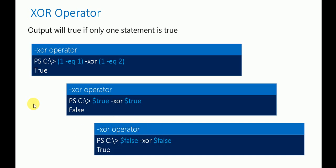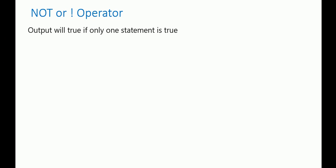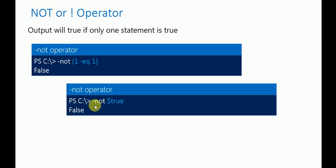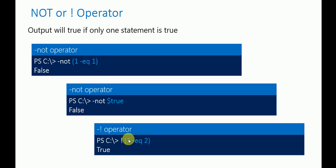Now let's look at the NOT operator — you can also use the exclamation mark to represent NOT. Using hyphen-not: if one equals one is true, the NOT operator converts it to false. If NOT true, it will be false. If one equals two, the output is false, and applying NOT to false gives us true. That's how the NOT operator works.